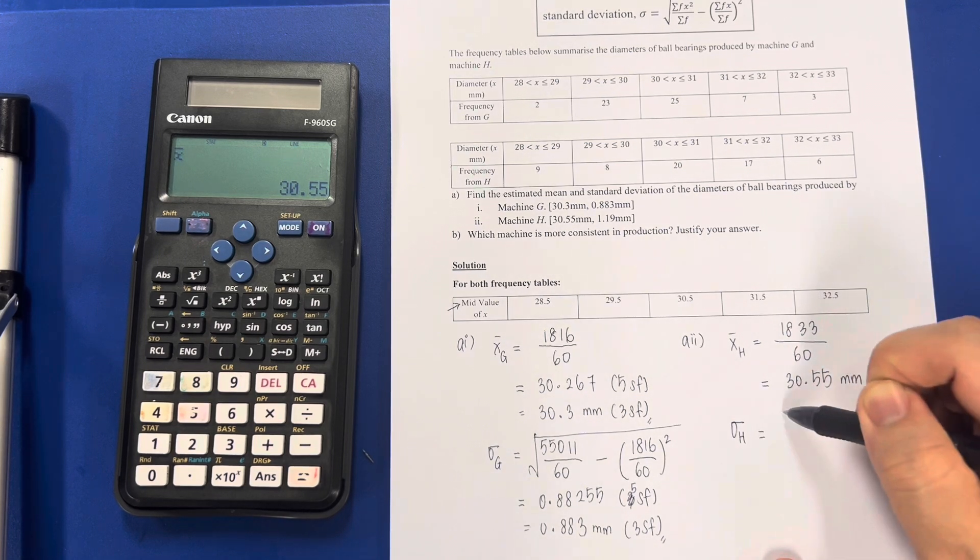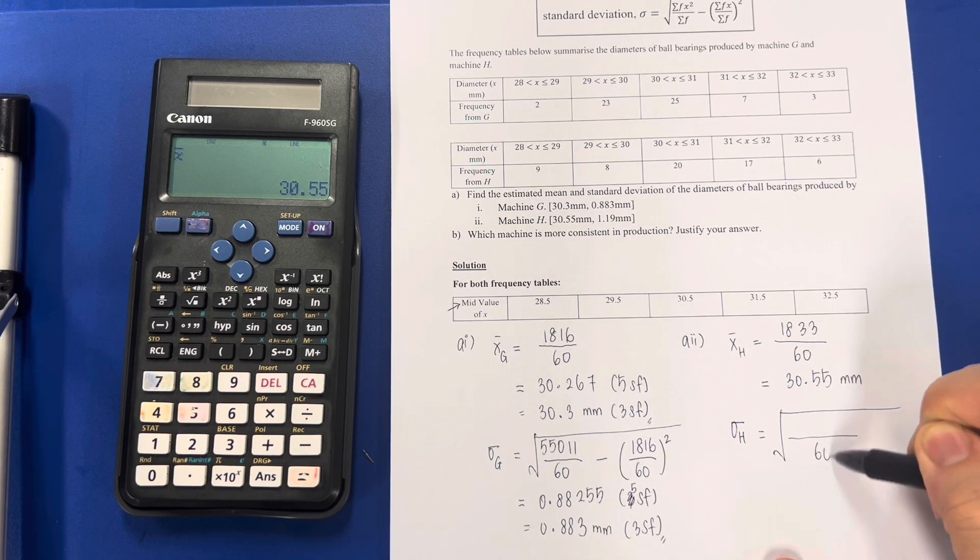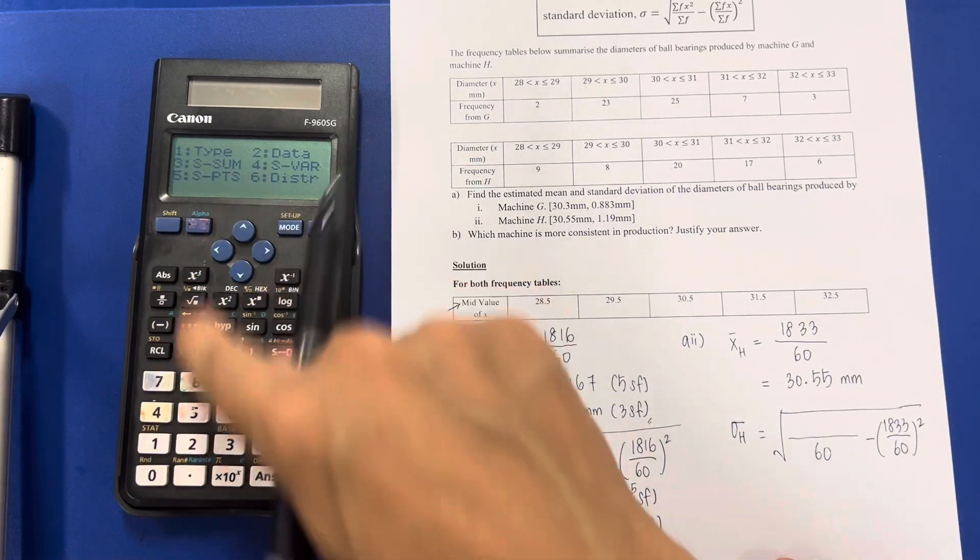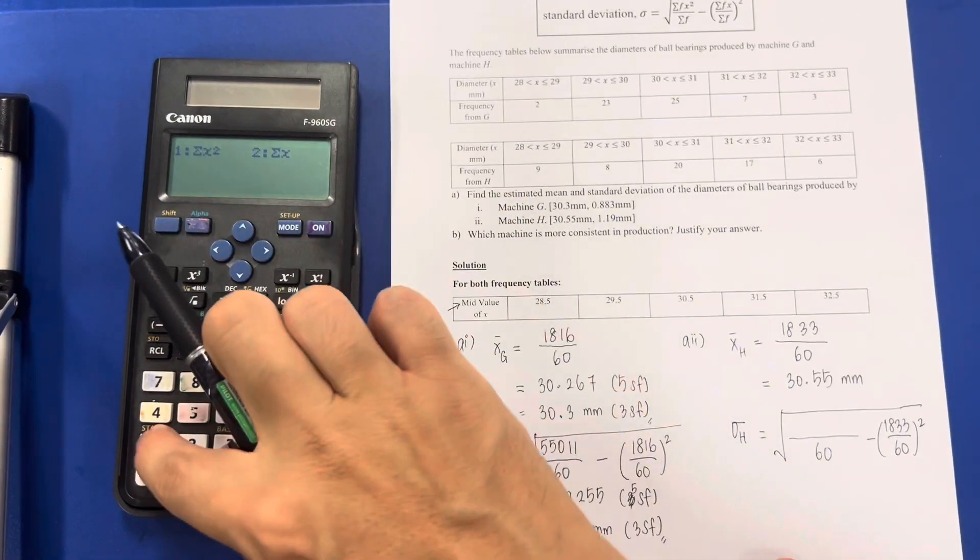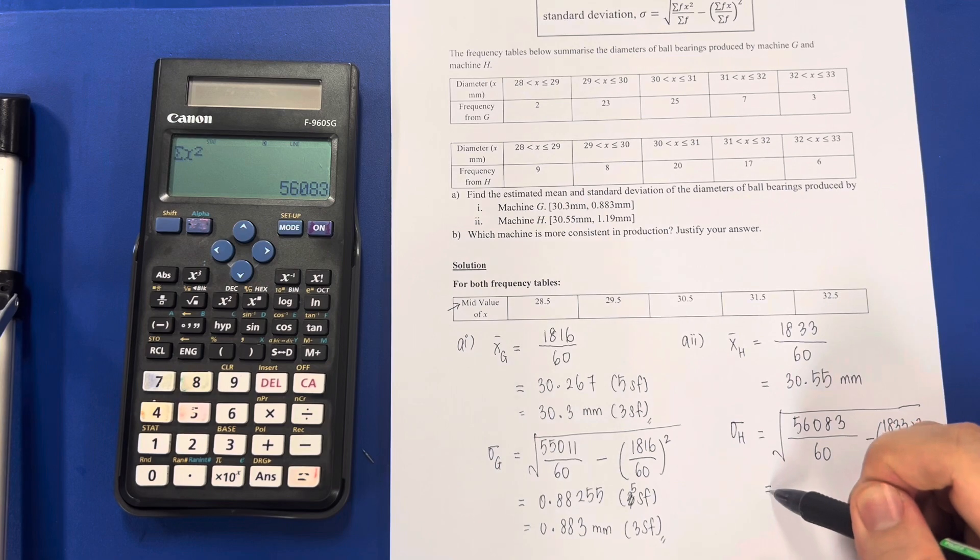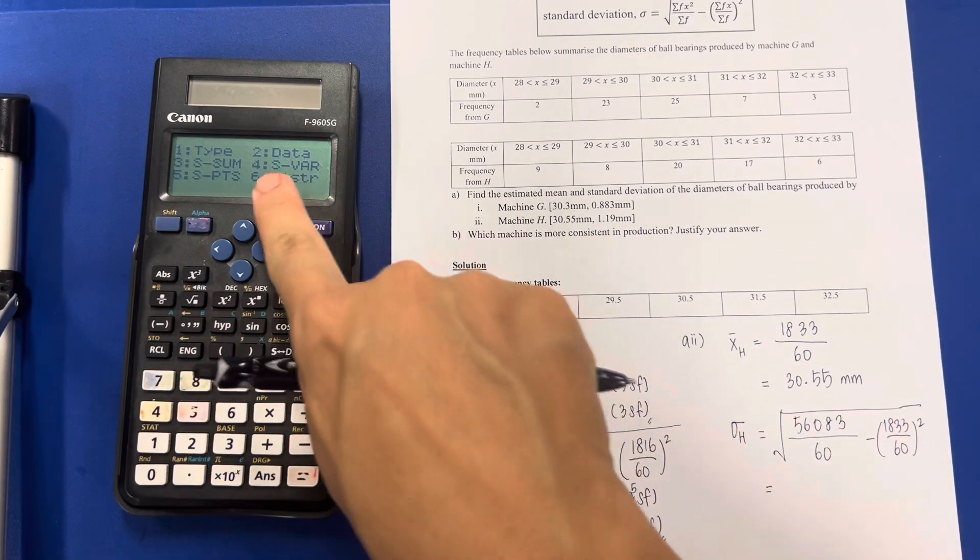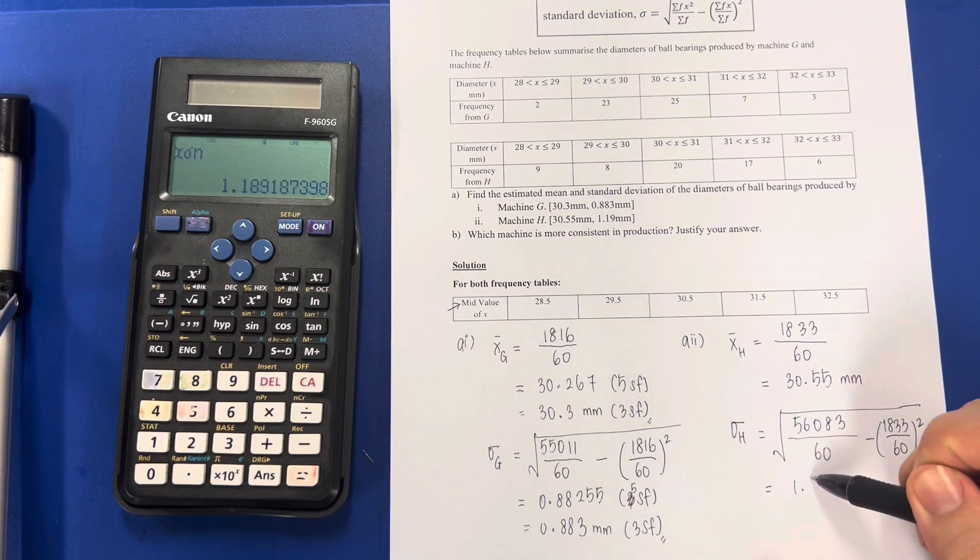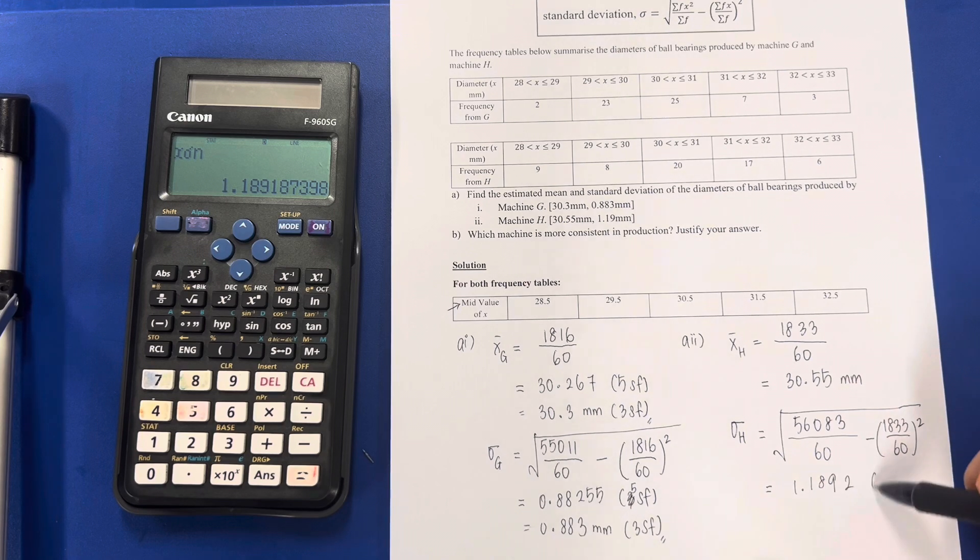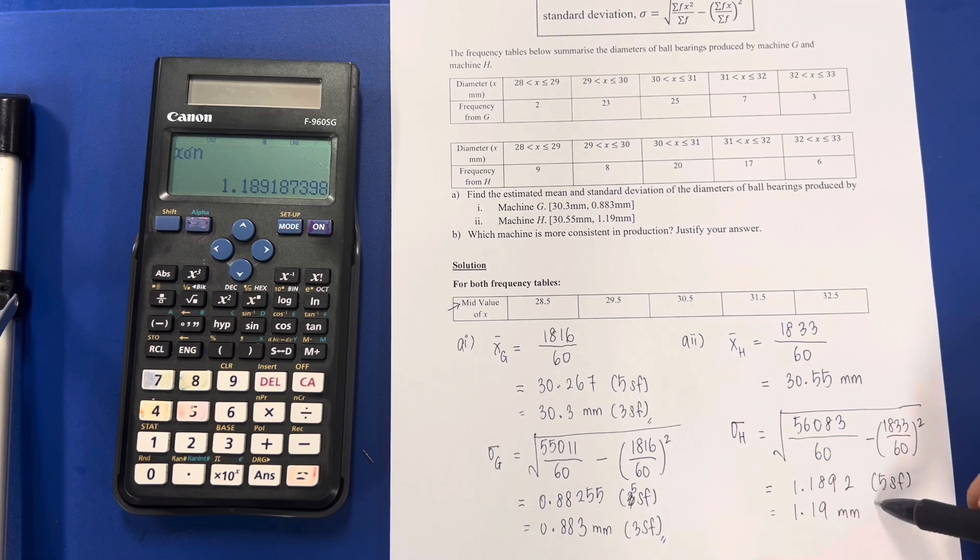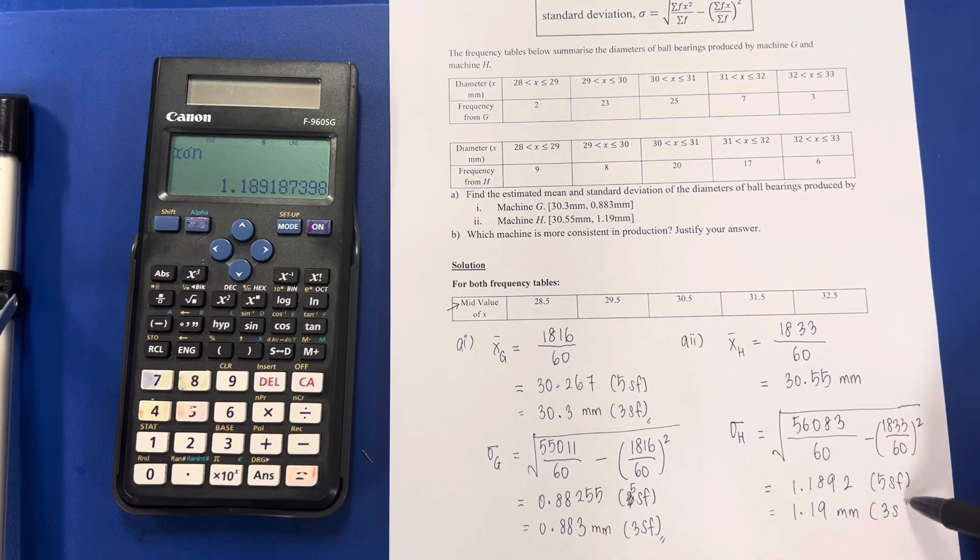Standard deviation over 60 minus 1833 over 60 square. Shift, shift, shift, shift, 1, the sum, the sum. This time round is the x squared: 56083. Shift 1 again, variance is 4, number 3: 1.1892. 1.19 mm, 3 significant figures, okay.